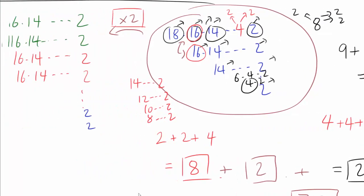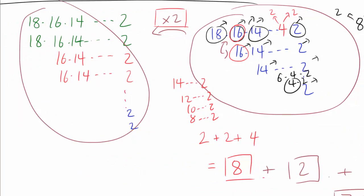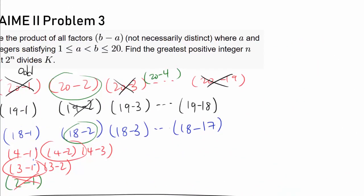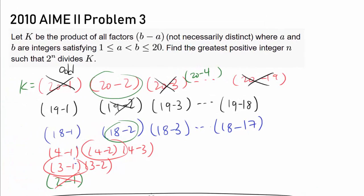So how many 2s do we have in the prime factorization of k? That's going to be twice that amount. So our final answer is 75 times 2, or 150.